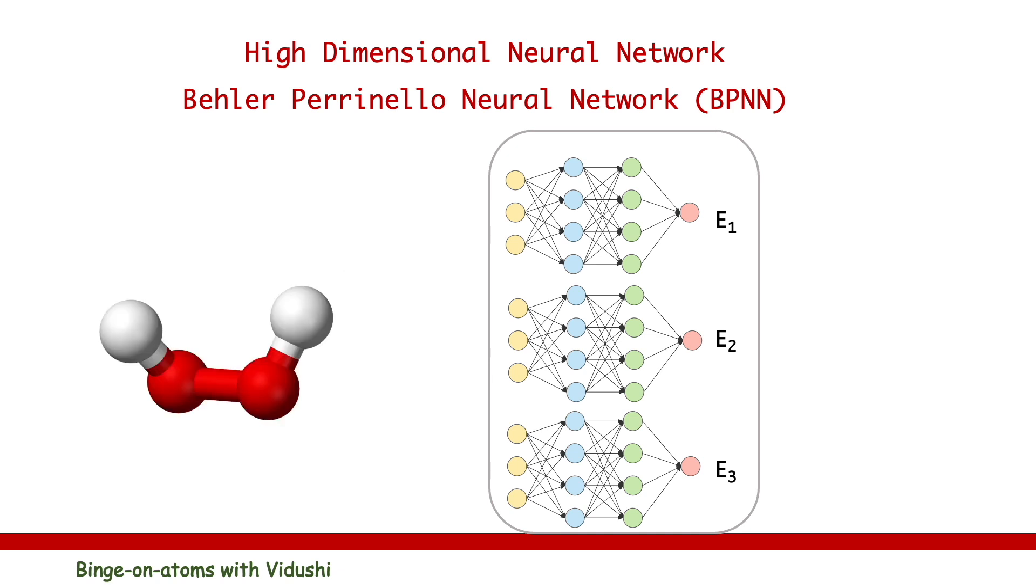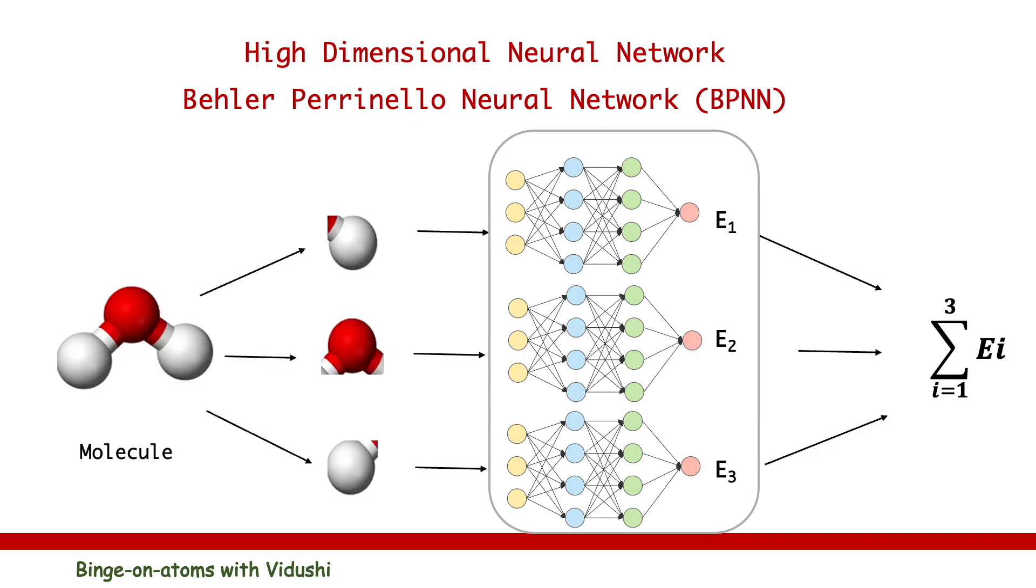Additionally, as the structure of each subnet is fixed, input for each subnet should be same in size. Atoms should be described by vectors of equal sizes. Therefore, the size of the input for these neural networks has to remain constant for all the training data.